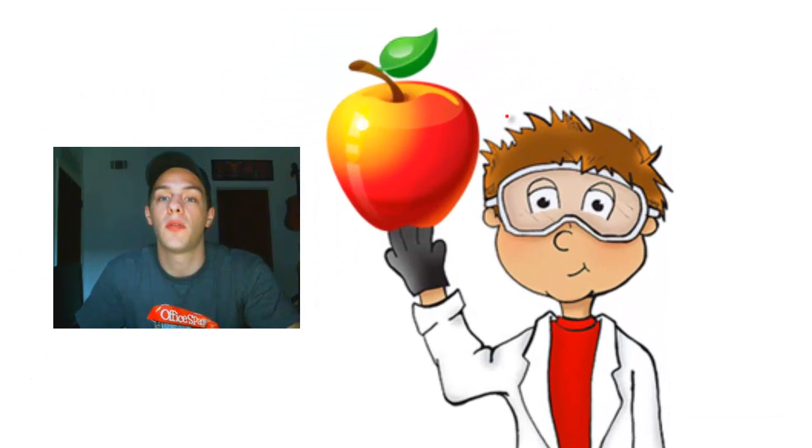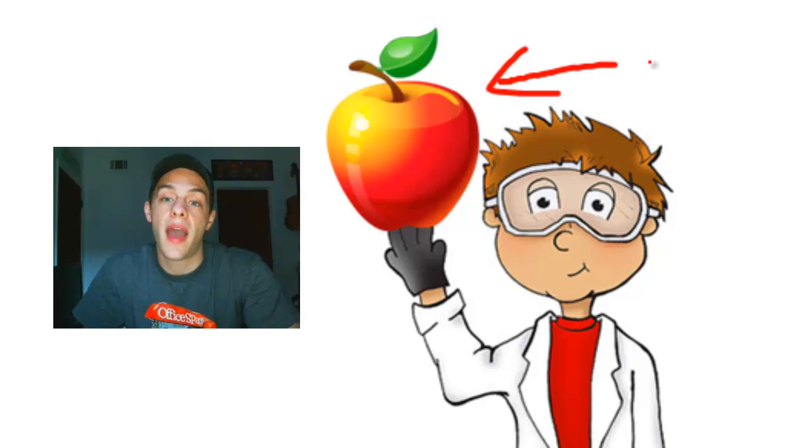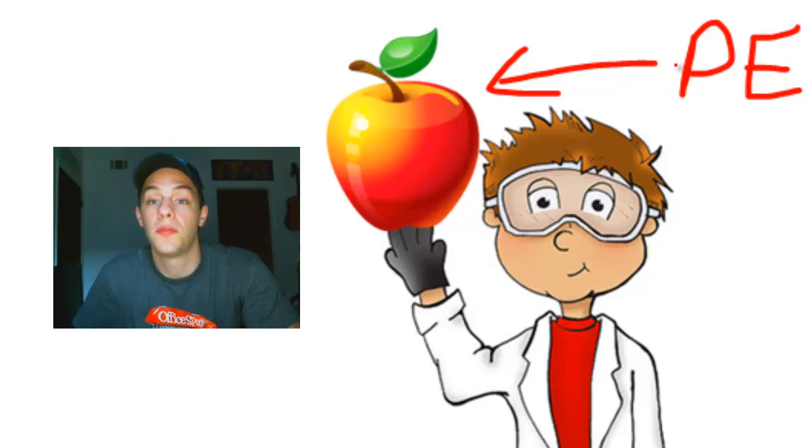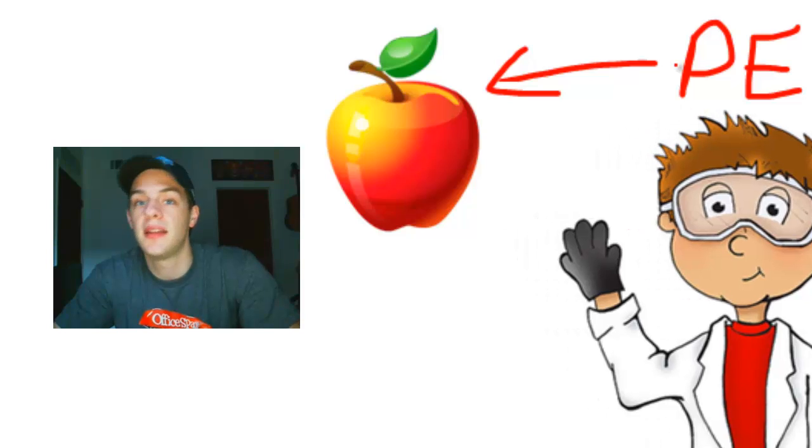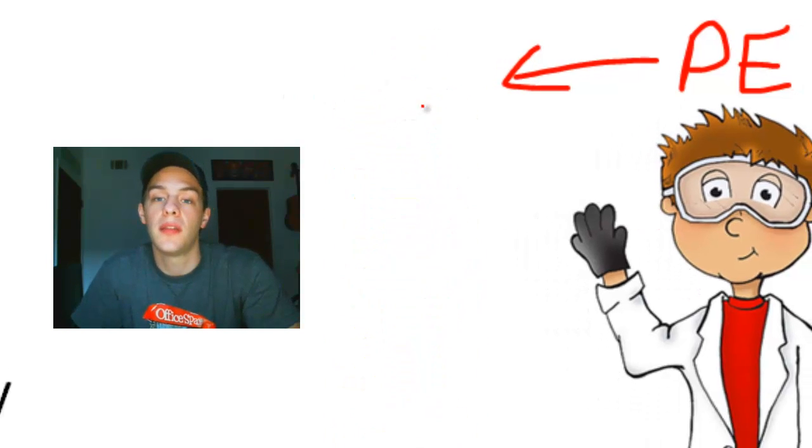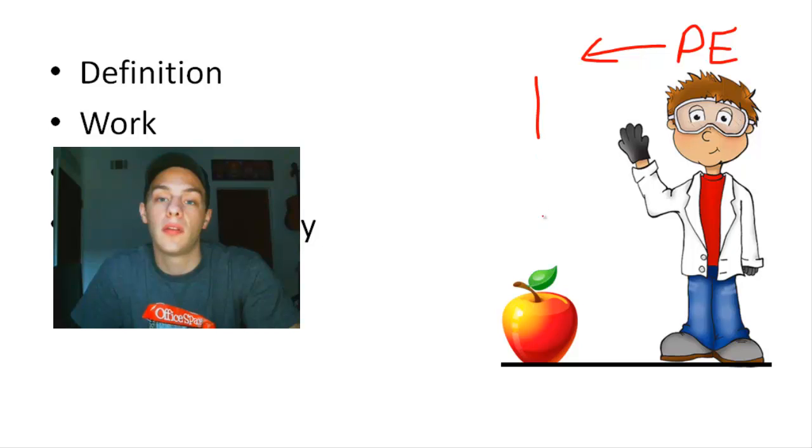So in this example here on the right side of your screen we have an apple that is being held several feet above the ground. Even though this apple is at rest, it still has energy. It has potential energy, simply because of its position within Earth's gravitational field. Now when the barrier that is holding up that apple is released and the apple is allowed to fall down, that potential energy that the apple initially had gets converted into kinetic energy as the apple accelerates downward.